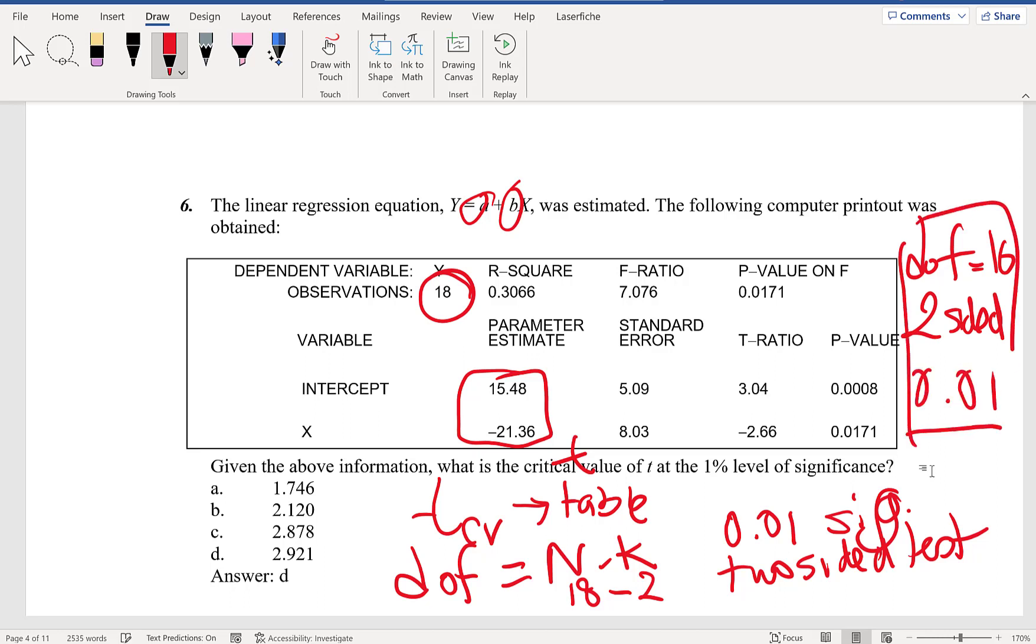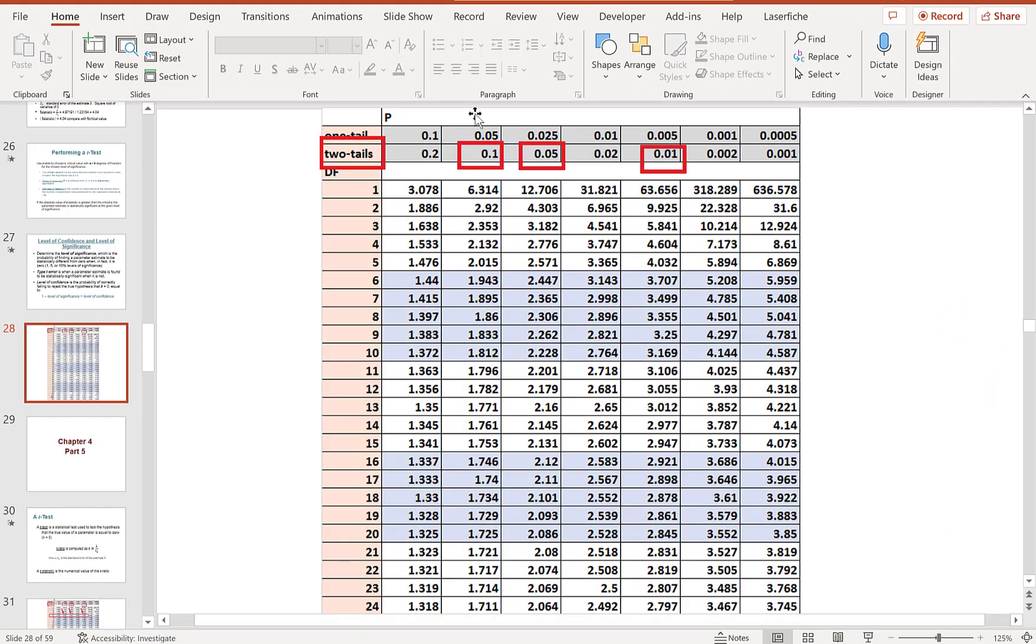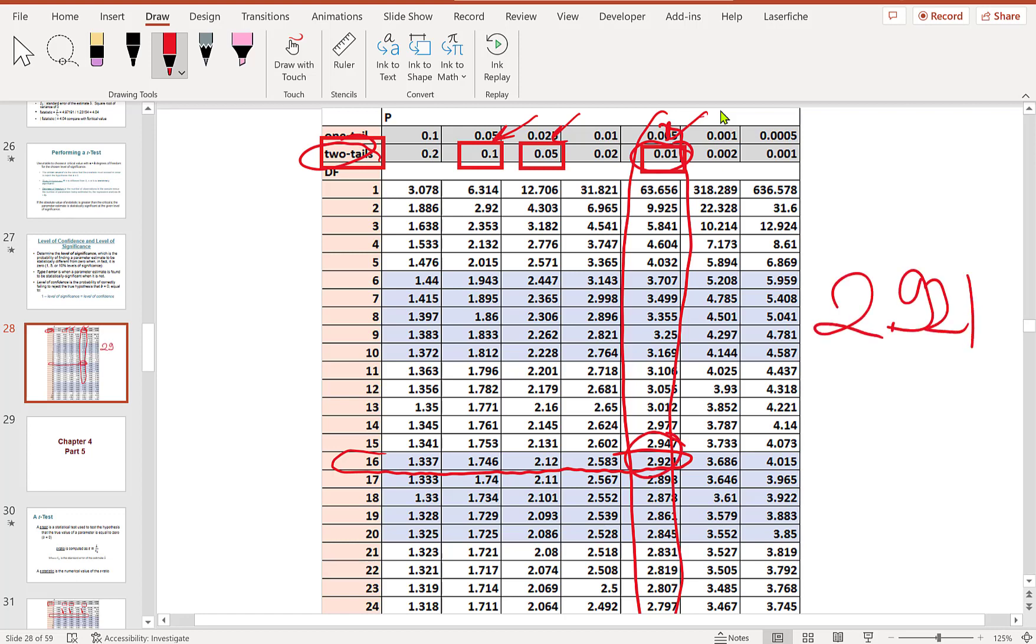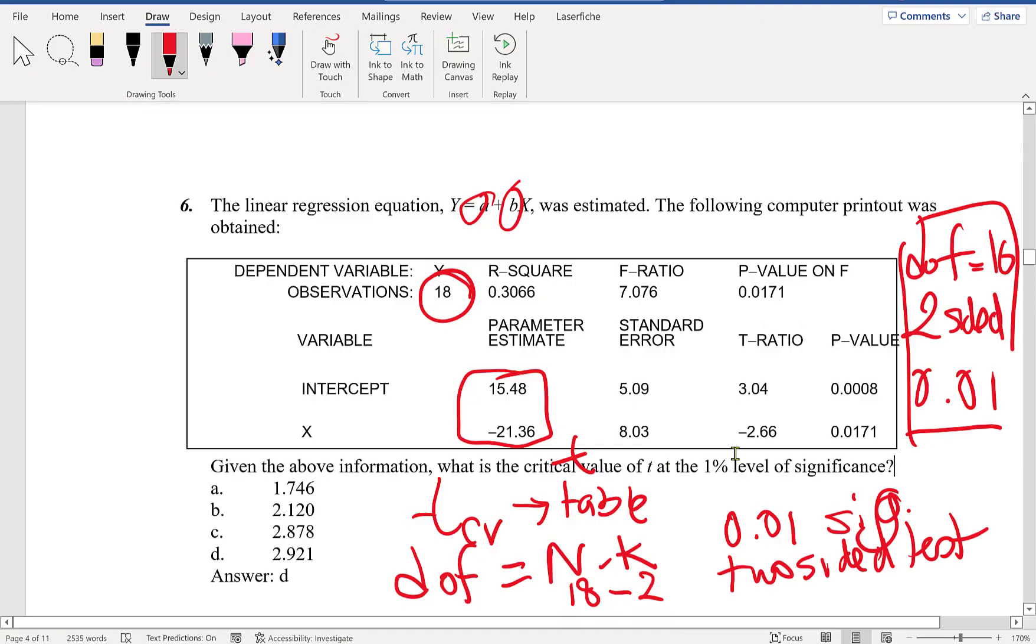I'm going to take you to our PowerPoint slide. This is a T table example. We're looking at the two tails, 1%—this is 10%, 5%, 1%. We're looking at this column, two-sided, and 16 degrees of freedom. The intersection is 2.921. So the critical value is 2.921. The correct answer is D.